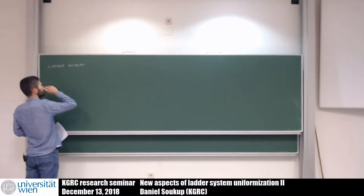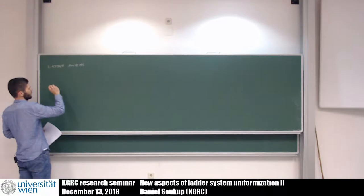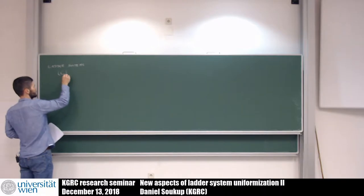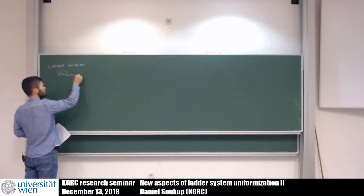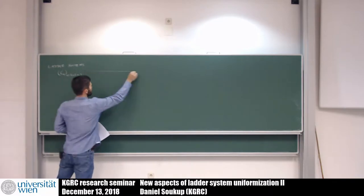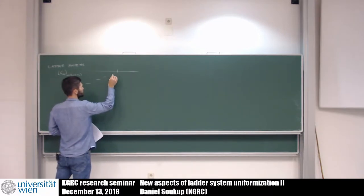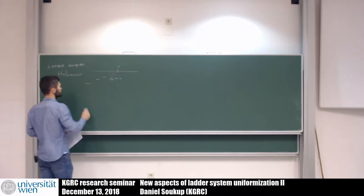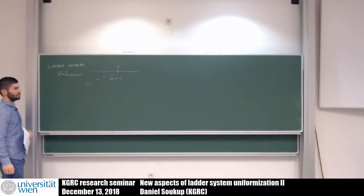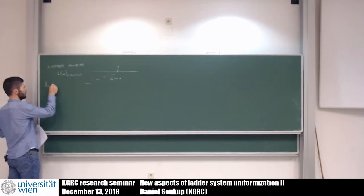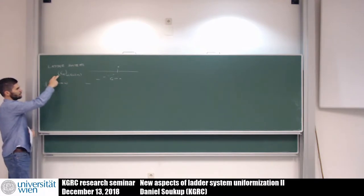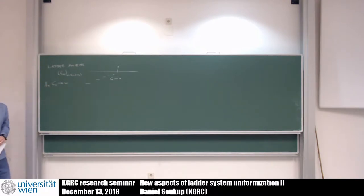Let's start with some basic definitions. We had these ladder systems, and I'm only going to use ladder systems that are defined everywhere at all limit countable limit ordinals. For each alpha I have a type omega sequence cofinal in alpha. A coloring of the ladder system is just a sequence of local maps with omega many colors — each C_alpha has its own function F_alpha.